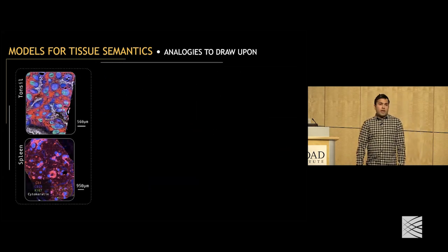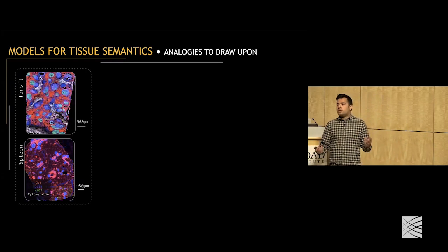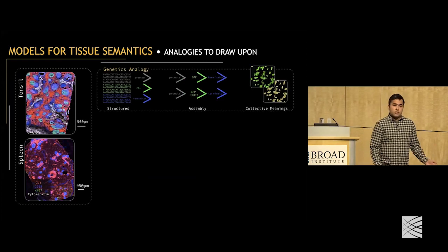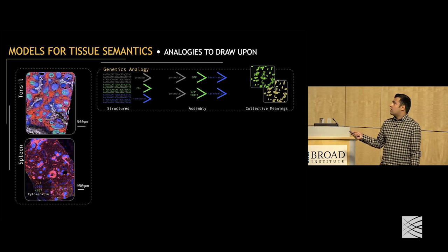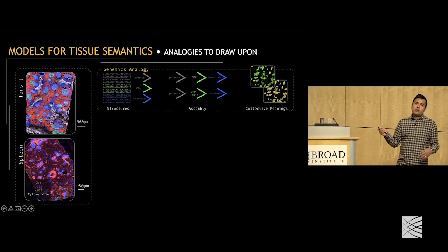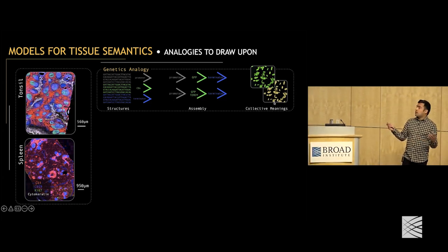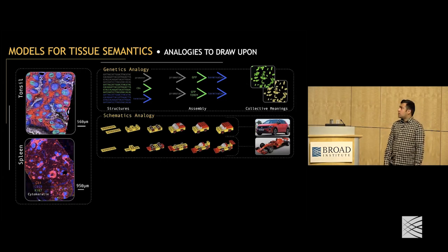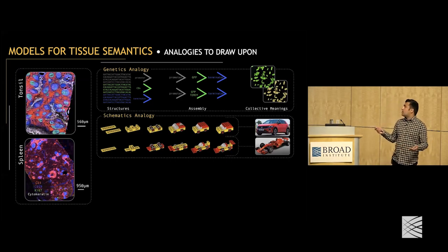Why might we expect there to be different models for tissue semantics? Here are three analogies. Should we think about the structures of a tissue by analogy with genetic parts — promoters, coding sequences, and genes — which can be assembled into related assemblies that give rise to different phenotypes? Or should we think about them by analogy with mechanical parts, which when assembled together in different ways give rise to machines, where different related assemblies yield machines with slightly different functionality?